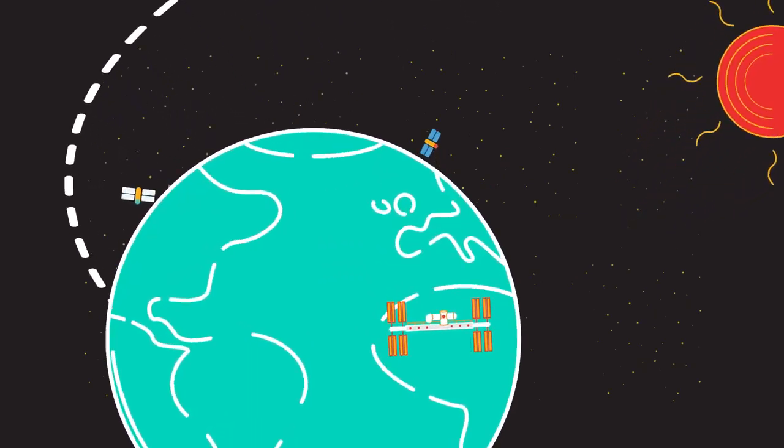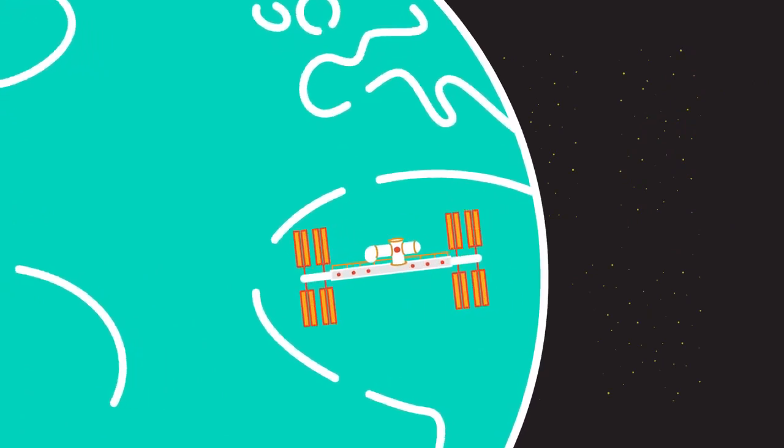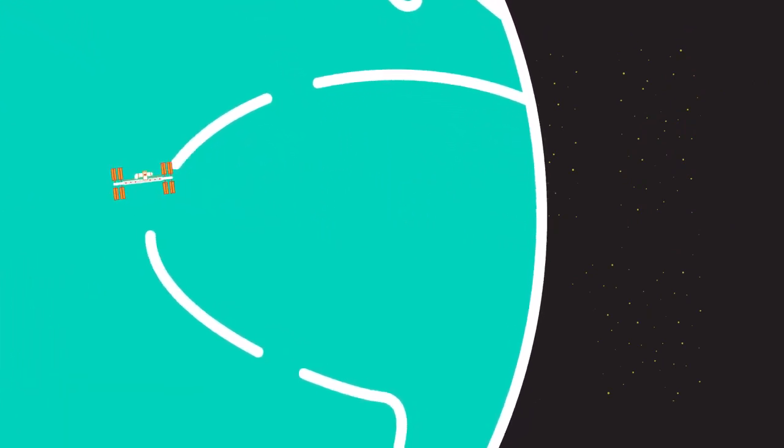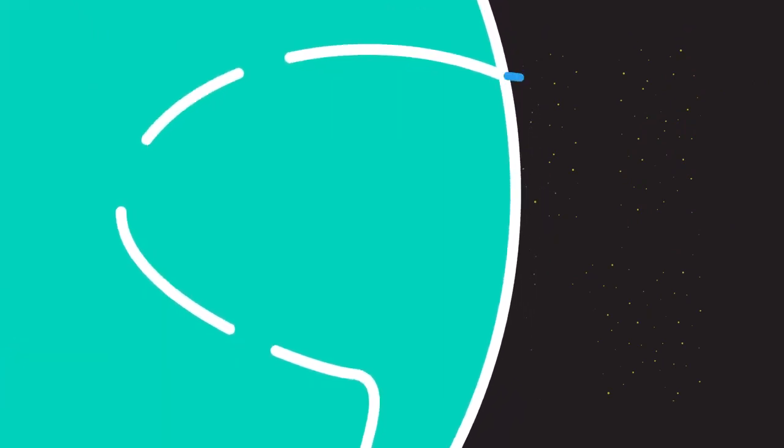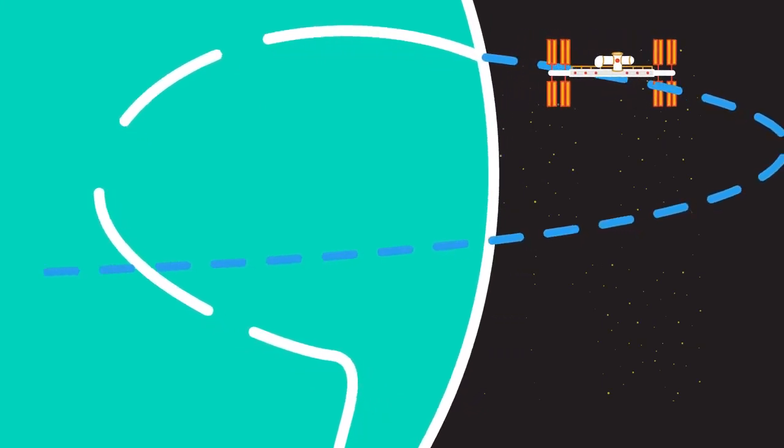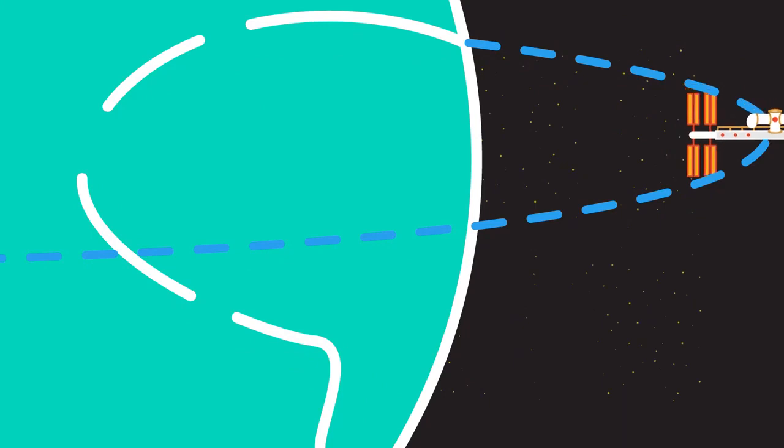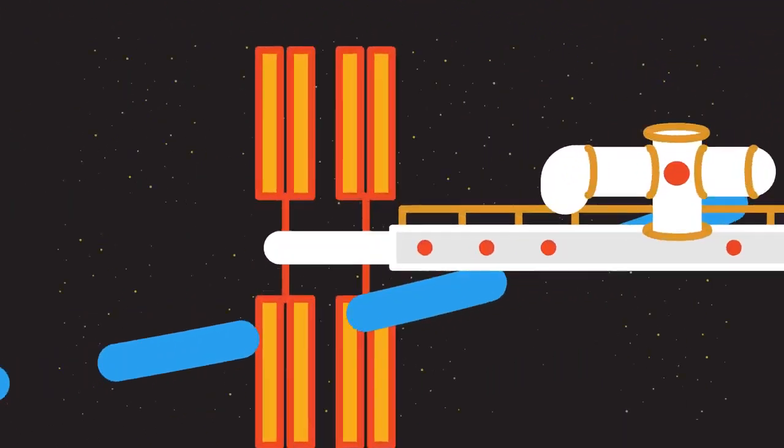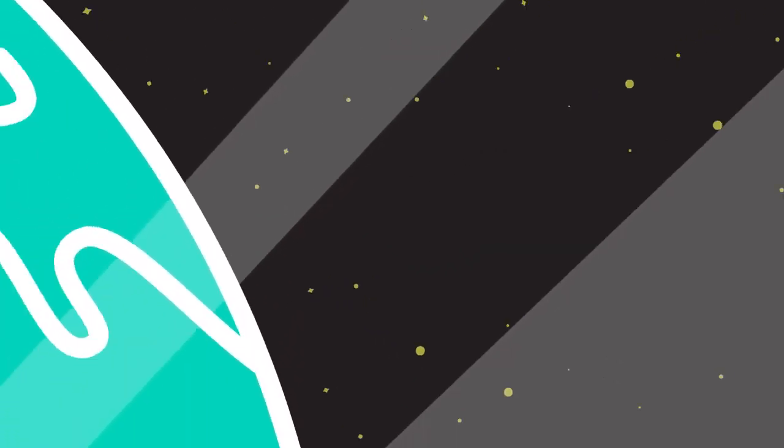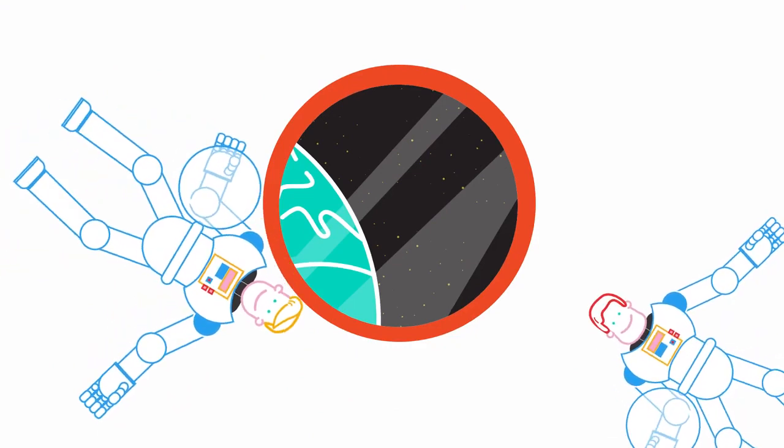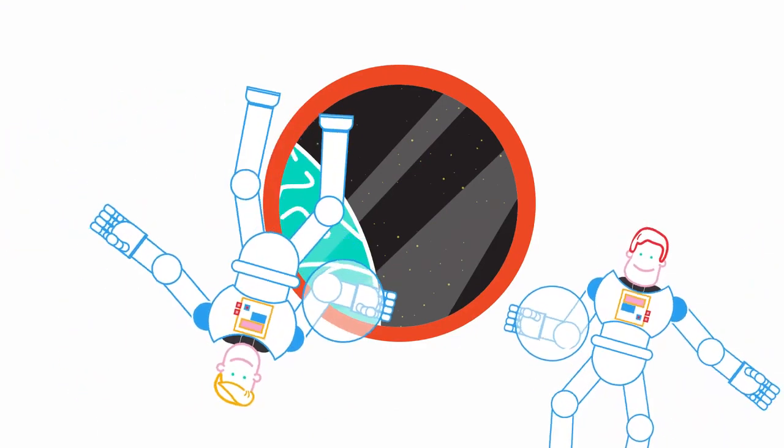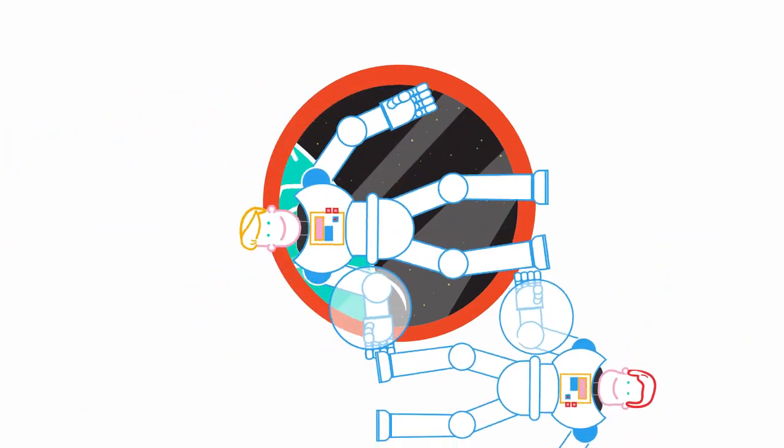If the space station were not moving, it would fall straight down towards the center of the earth. In an orbit, it is constantly in a freefall as it constantly bends round in its orbit. All the objects and people in the space station are falling together, and so relative to each other they are weightless.